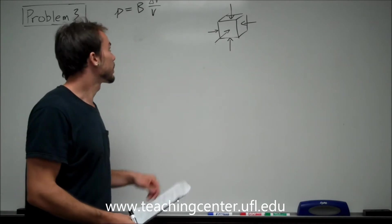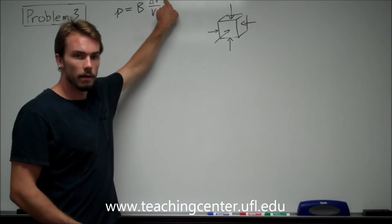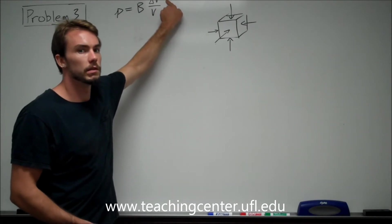This formula is very specific. In the book, it says V is the original volume, and this guy right here is the absolute value of the change in volume.